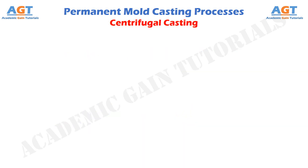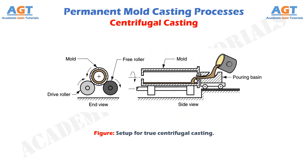This figure shows a setup for true centrifugal casting, where the mold rotates about a horizontal or vertical axis. Mostly the mold is rotated about a horizontal axis and the molten metal introduced from an external source. The centrifugal force acts on the molten metal which forces it at the outer wall of the mold.